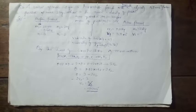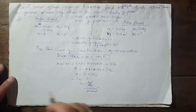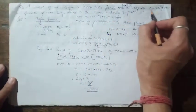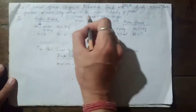In this third part, we'll discuss a problem based on the law of conservation of momentum. A bullet of mass 20 gram is horizontally fired with a velocity of 150 m/s from a pistol of mass 2 kg. What is the recoil velocity of the pistol?